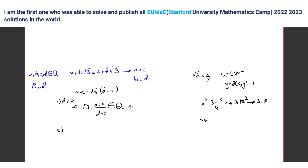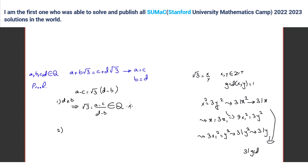Because three is prime, three divides x. So x equals 3x₁. Then replacing, nine x₁ squared equals 3y squared, so three x₁ squared equals y squared, meaning three divides y. But that's a contradiction because gcd of x and y is one.